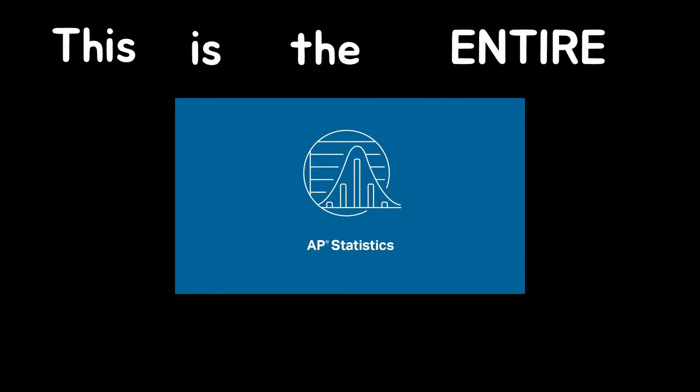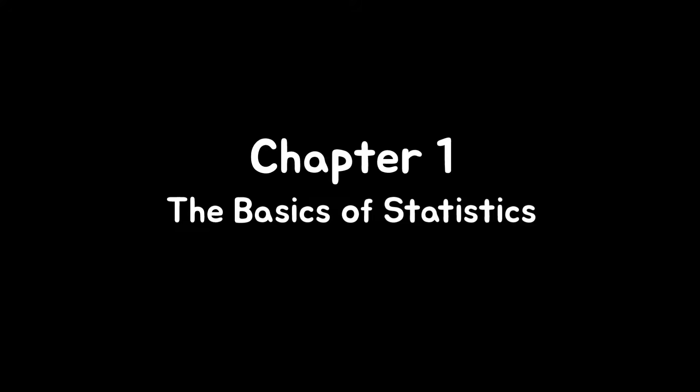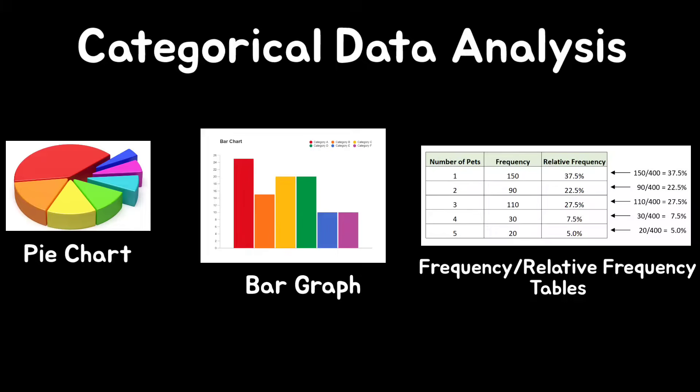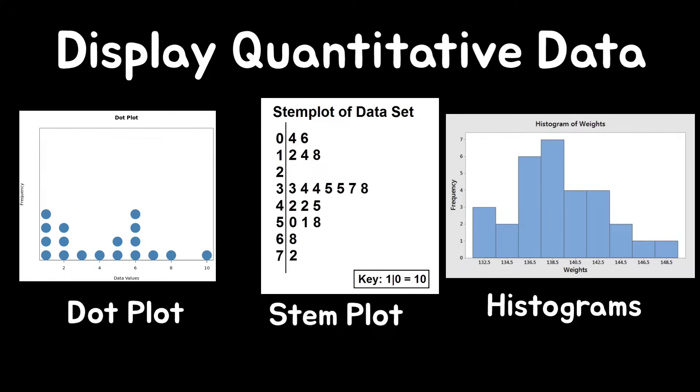This is the entire AP Statistics course summarized in under two minutes. Chapter one is the basics of statistics. You'll learn how to analyze categorical data through pie charts, bar graphs, frequency, and relative frequency tables, as well as display quantitative data through dot plots, stem plots, and histograms.